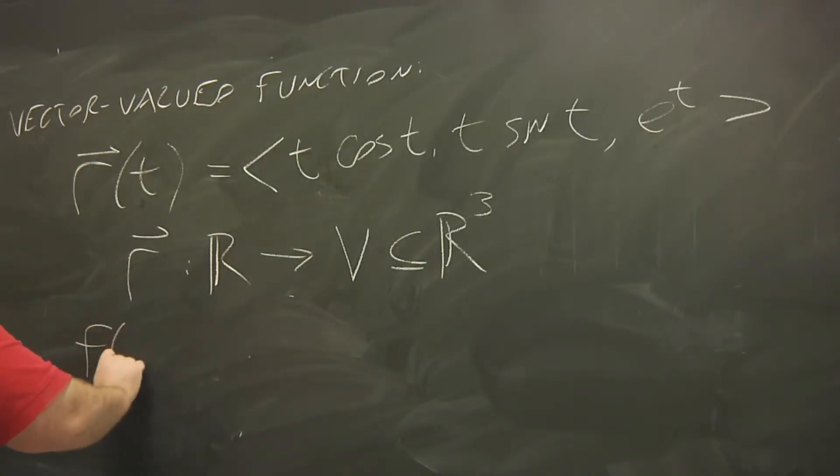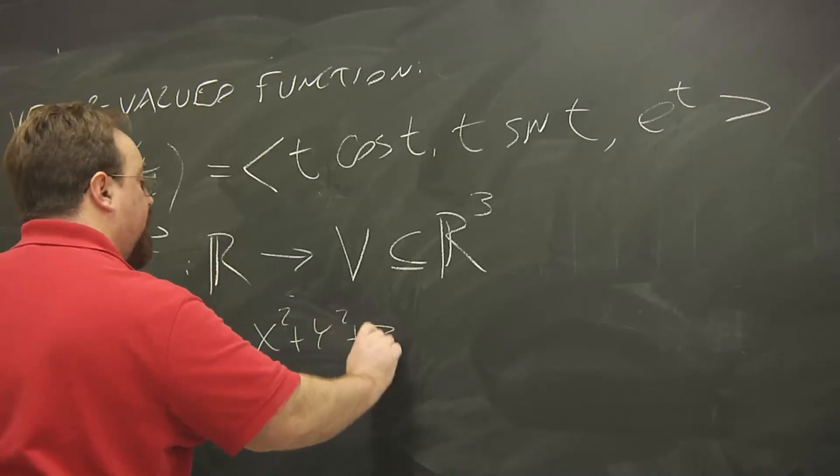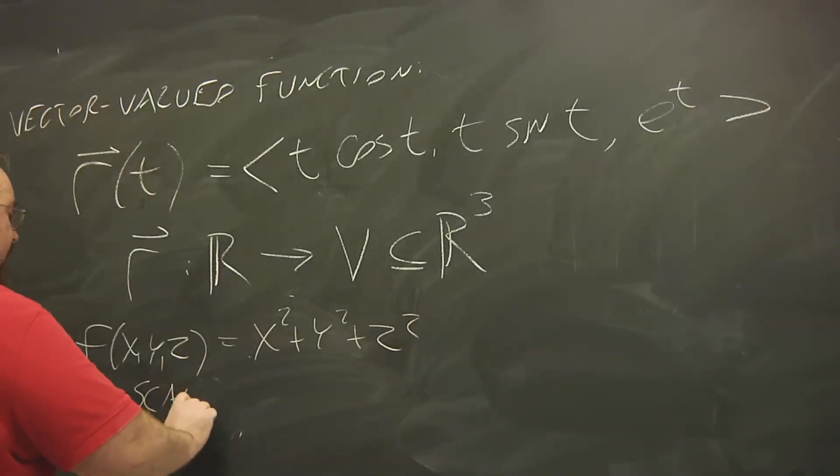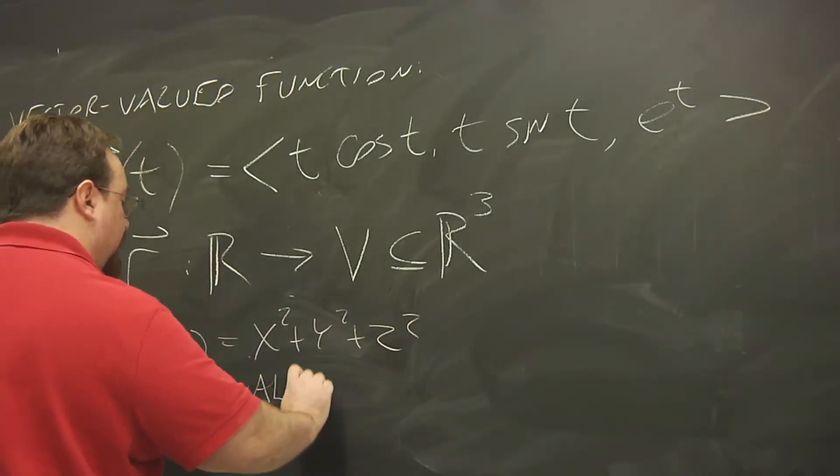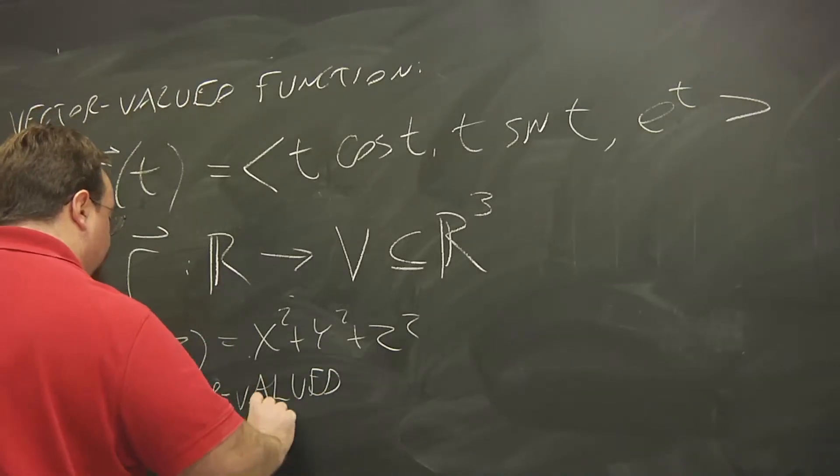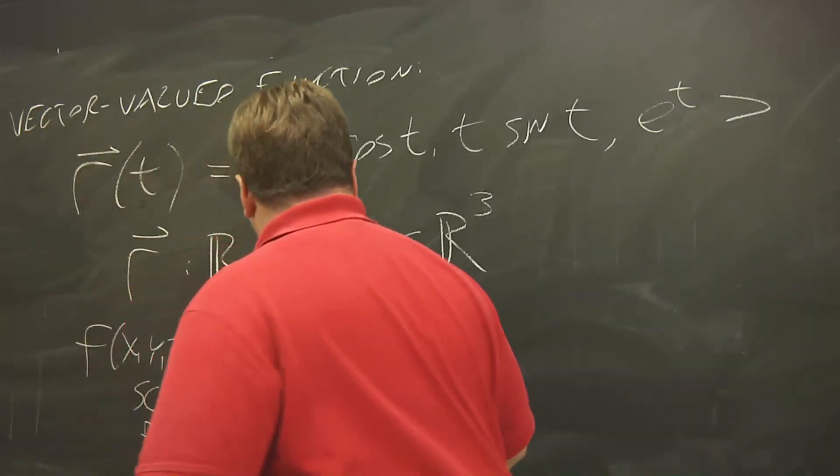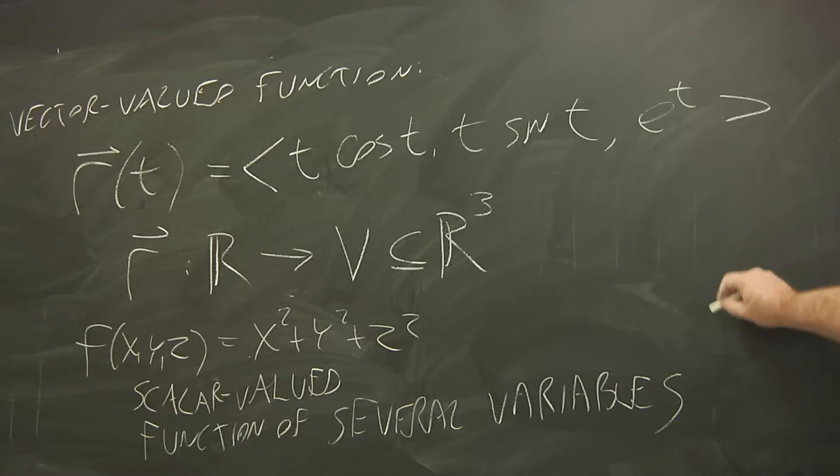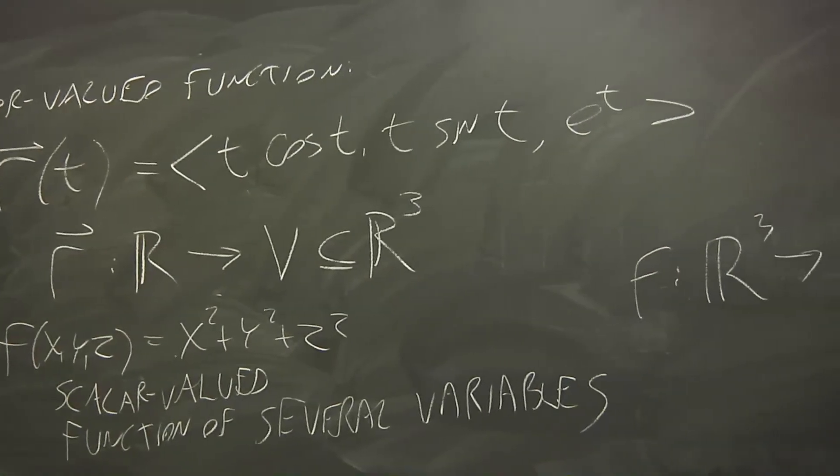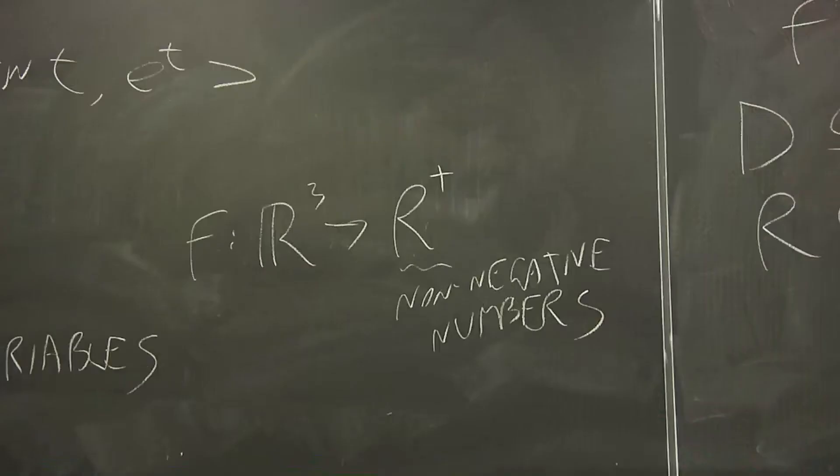On the flip side, so the function we talked about a second ago, I'll just change it a little bit. If f(x,y,z) is x² + y² + z². This, we say, is scalar-valued because once we plug in x, y, and z, we only get one number as output. But it is a function of several variables. So we say that this function maps all of R³ into, I'll call this R+. That's all real numbers except the negatives.